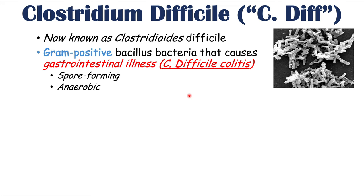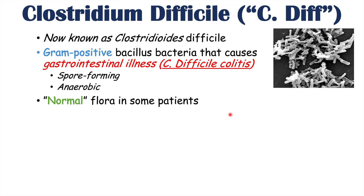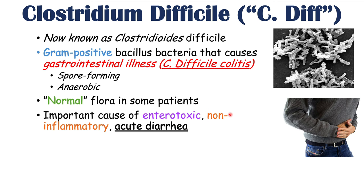Although C. diff can cause gastrointestinal illness, it may be part of the normal gut flora in some patients, residing in the gastrointestinal tract without causing illness. Nevertheless, this bacteria is an important cause of enterotoxic, non-inflammatory acute diarrhea. Acute diarrhea occurs for less than two weeks, although it could lead to a chronic diarrhea — greater than two to four weeks — in some cases.